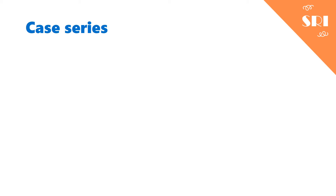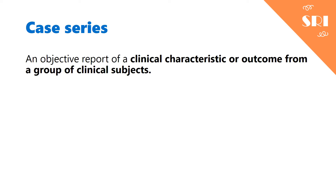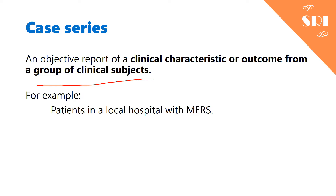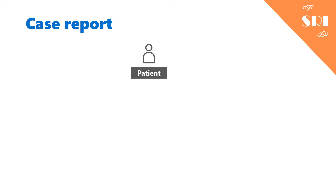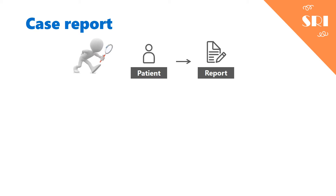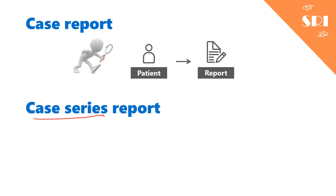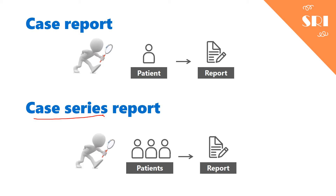In case series, it is very similar, but instead of one patient, we have a group of patients. For example, we can make a report on all patients with MERS in a local hospital. So in case reports, we find a patient that is very interesting and write a report about him. In a case series, we find a group of interesting patients and write a report about them.